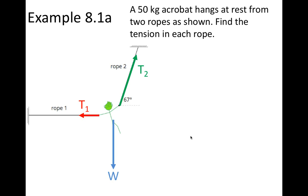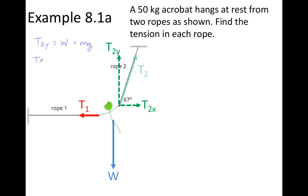Because T2 acts at an angle, we're going to need to separate it into its components, T2x and T2y. T2 is still there — these two components are the two parts of T2. Since the acrobat is at rest, we automatically know that the forces acting on her are balanced. We're going to find T2y by calculating the weight. The total force up, which is T2y, has to equal the total force down, the weight. Weight is just m times g, so we plug in the mass of 50 kilograms times g, using a value of 10, and we calculate T2y as 500 Newtons. We're going to use that along with the angle to find the tension in cable two.